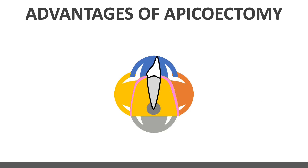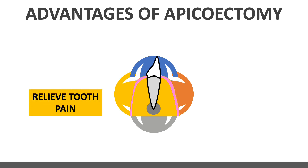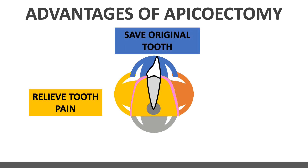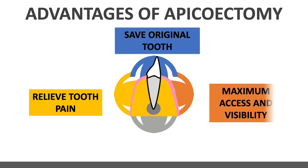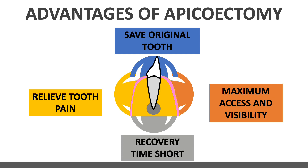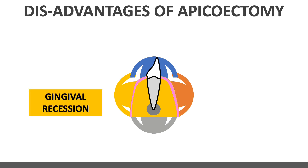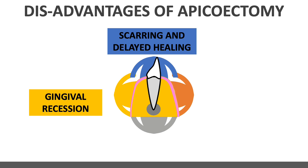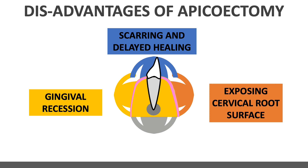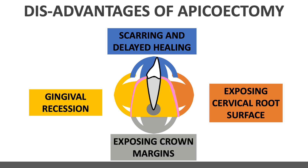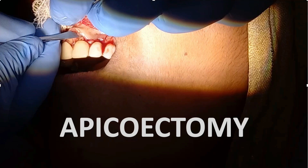Advantages of apicectomy: it relieves tooth pain, saves the original tooth from extraction, provides maximum access and visibility due to the trapezoidal flap, and recovery time is short. Disadvantages include gingival recession, scarring and delayed healing, exposure of the cervical root surface, exposure of crown margins, and some amount of tissue loss — gingival recession will always occur to some degree in any type of oral surgery.